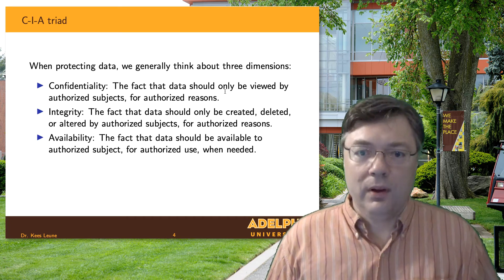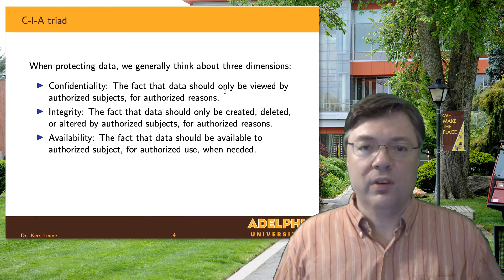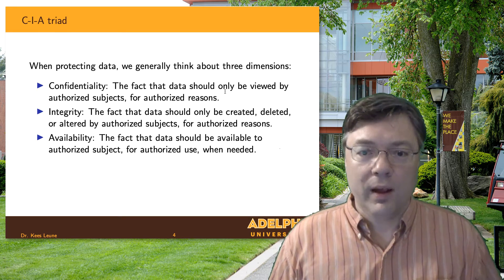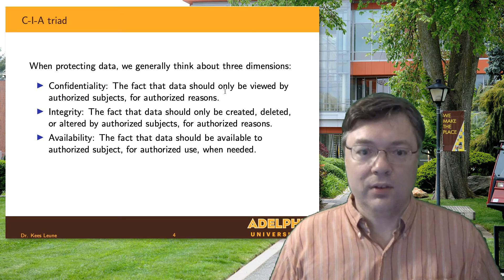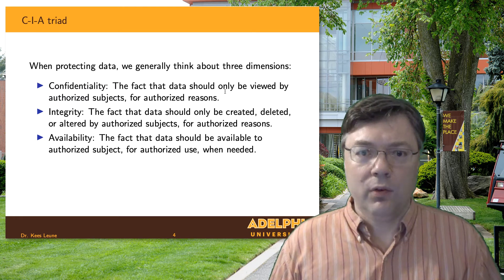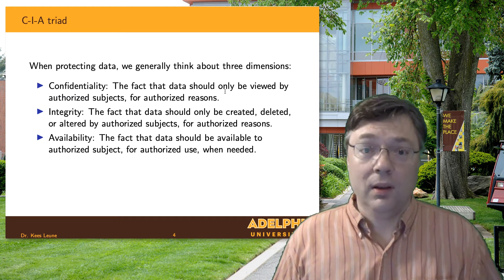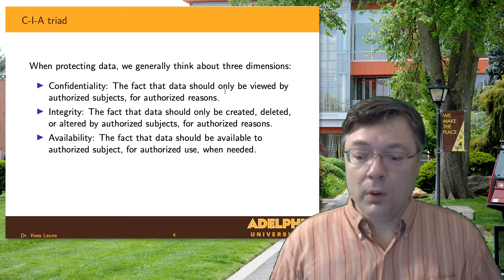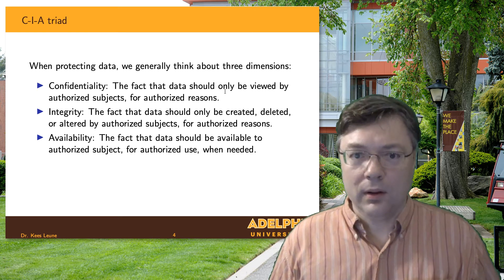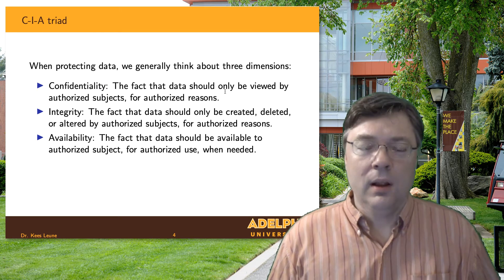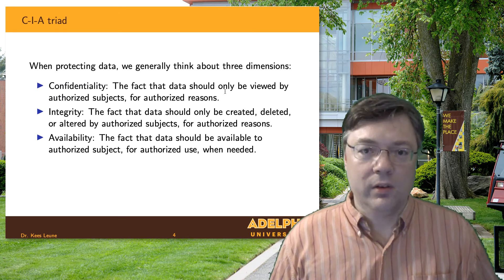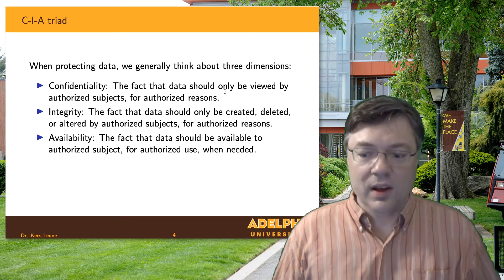And then lastly is availability. We talked about the DBMS providing persistence of data — we want to make sure that data is available. Availability is a big one; as I'm recording this, I'm going on three or four days without any form of internet connectivity. When we look at this, we see that cybersecurity in general, but data security in particular, is defined by these three concepts: confidentiality, integrity, and availability. Together, we call it the CIA triad.